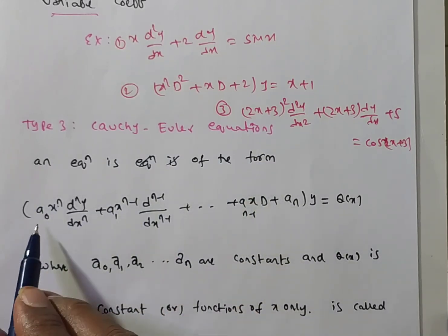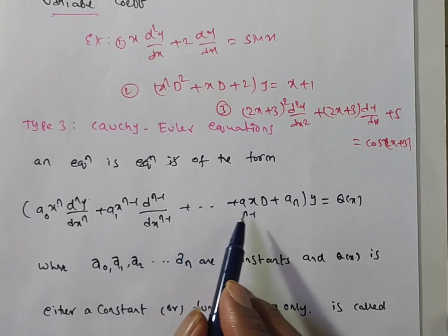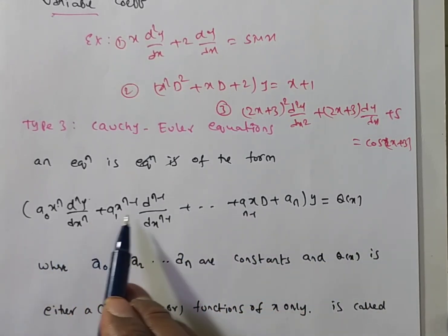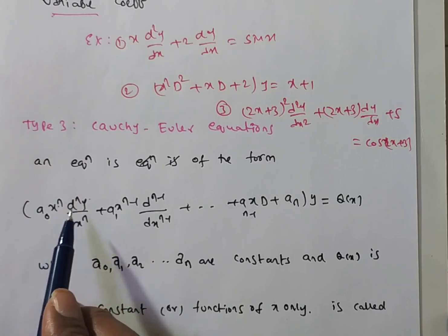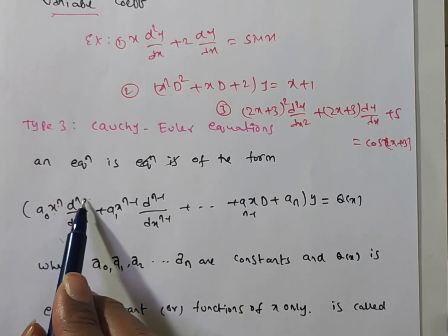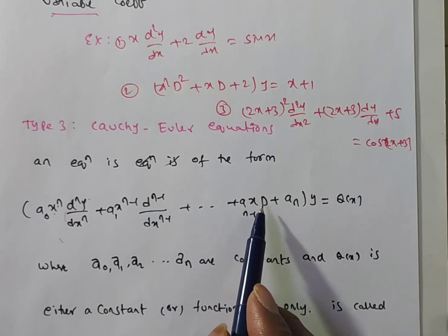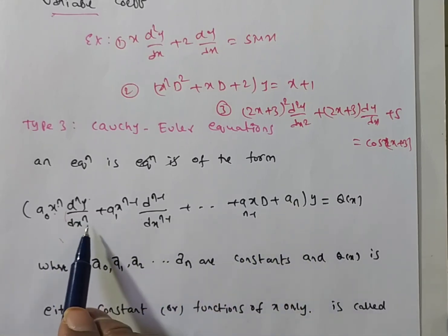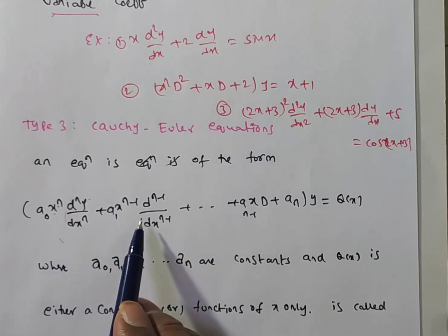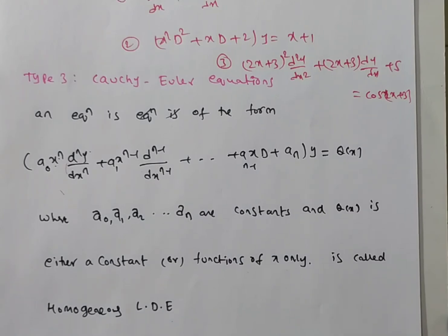The Cauchy-Euler equation has the form: a₀ xⁿ DⁿY + a₁ xⁿ⁻¹ Dⁿ⁻¹Y + … + aₙ Y = q(x), where a₀, a₁, …, aₙ are all constants. In each term, the index of x equals the order of the derivative — for example, the coefficient of DⁿY is a₀xⁿ (index n, order n). This is also called the homogeneous linear differential equation or Euler-Cauchy equation.